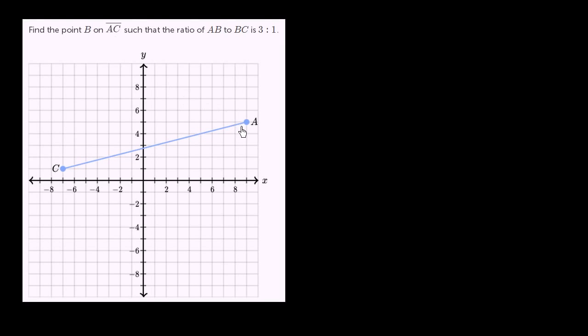Find the point B on segment AC such that the ratio of AB to BC is 3 to 1. I encourage you to pause this video and try this on your own.